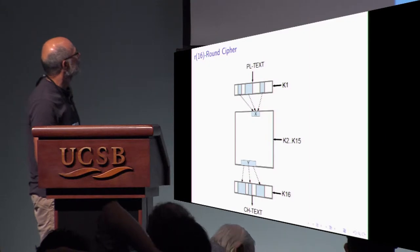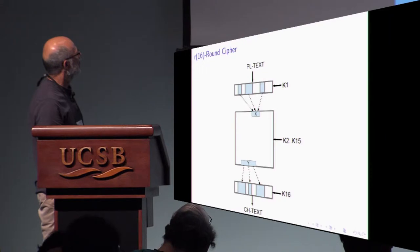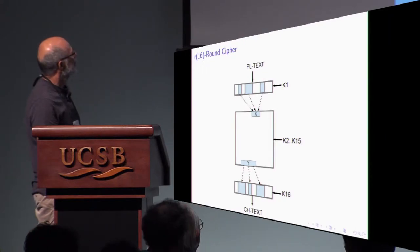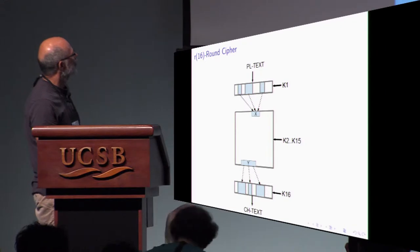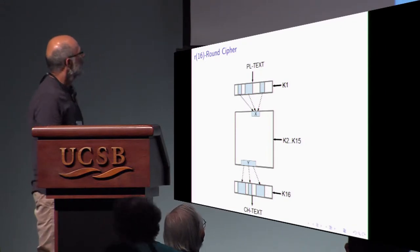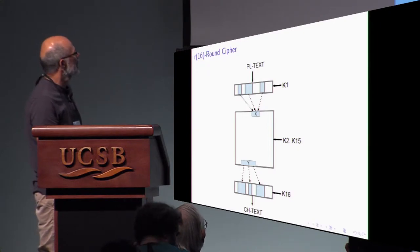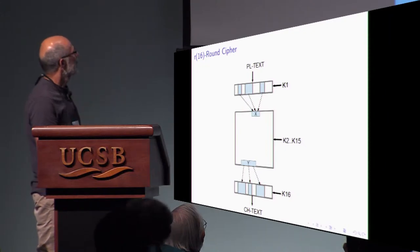This is last round. And we look at some bits which is output of the first round. Those bits are input to the last round. And we find a joint distribution of these two vectors. These are vectors, not one bit. And this distribution actually depends on all these key bits, these round keys.